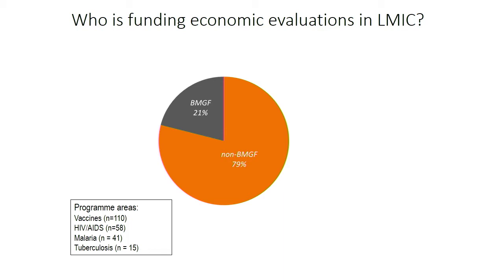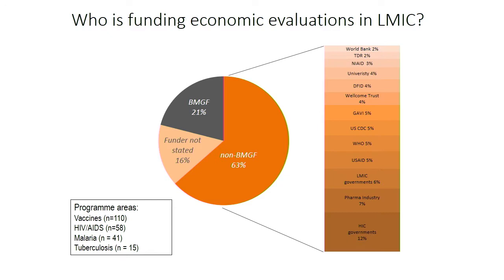The first piece of work was to look at what was already going on in the world in terms of economic evaluations, with a clear focus on Gates-funded ones. In just four program areas — vaccines, HIV/AIDS, malaria, and TB — we found that the Gates Foundation was funding about a fifth of all economic evaluations we could find. Funder was not stated in about 16%. It was a real mixed bag of other funders doing the rest, and that was a big surprise — Gates was really a leader here, which gave us a lot of motivation.